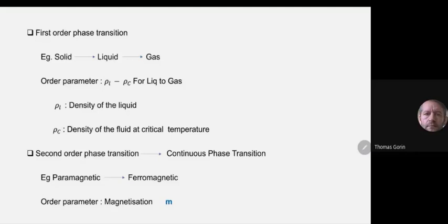We study the phase transition with respect to thermodynamic quantities other than free energy. From the statistical physics point of view, one of the most important quantities is the order parameter — which is magnetization for magnetic transitions, and density for liquid-to-gas transitions. Free energy is the thermodynamic definition, but in statistical physics we look at many other quantities.